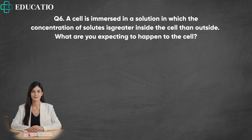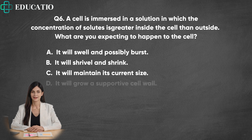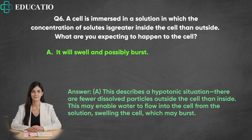Question 6. A cell is immersed in a solution in which the concentration of solutes is greater inside the cell than outside. What are you expecting to happen to the cell? A. It will swell and possibly burst. B. It will shrivel and shrink. C. It will maintain its current size. D. It will grow a supportive cell wall. Answer: A. This describes a hypotonic situation. There are fewer dissolved particles outside the cell than inside. This may enable water to flow into the cell from the solution, swelling the cell, which may burst.